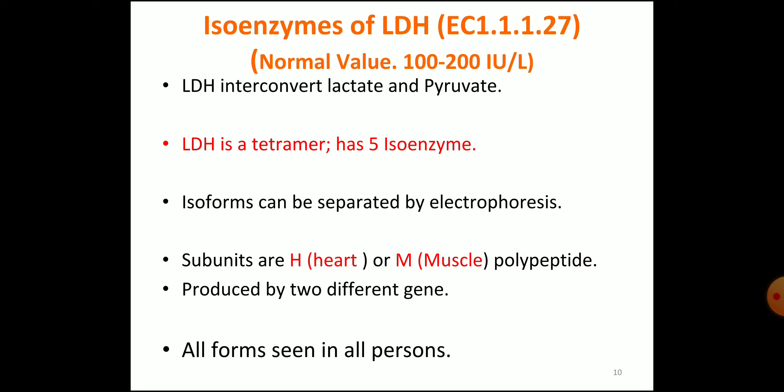LDH is a tetramer with five isoenzymes; isoforms can be separated by electrophoresis. Subunits are H from heart and M from muscle — polypeptides produced from two different genes.